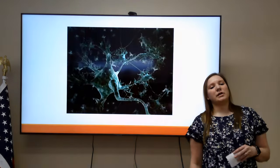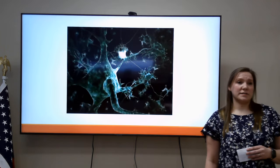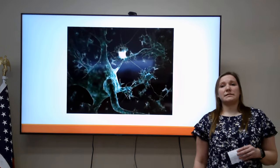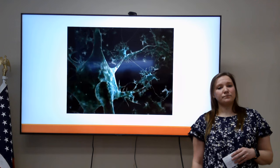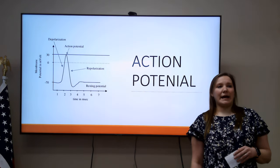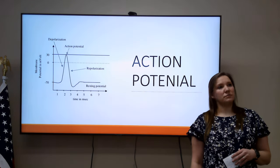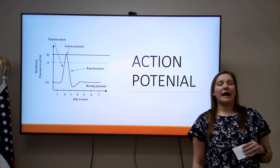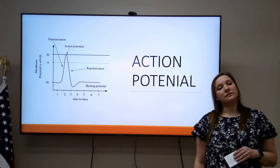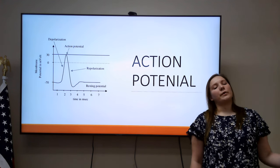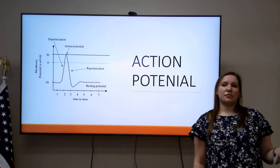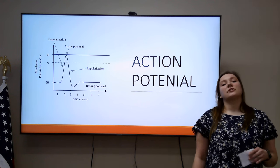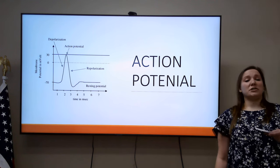Now that we know a little bit about what makes up the nervous system, I want to share with you a little bit of how the nervous system works. This is done by an action potential. At rest, our neurons are at negative 70 millivolts. When we receive a stimulus, and a stimulus is big enough, it's going to reach a threshold.